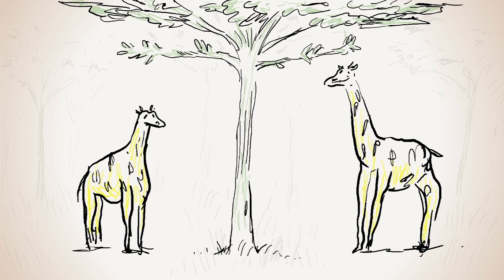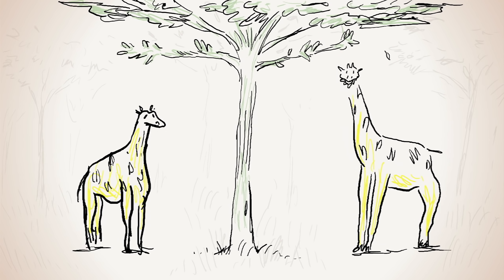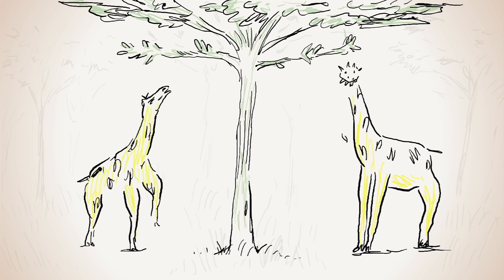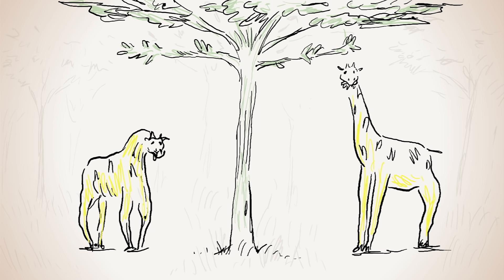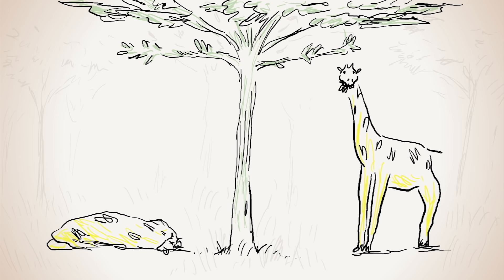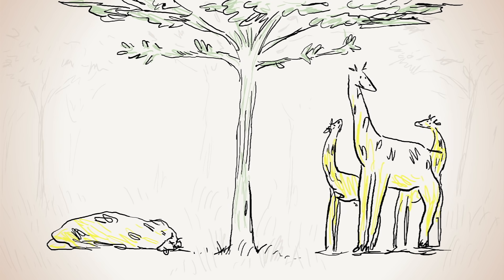To answer this question, it helps to understand natural selection. Natural selection simply means that traits which help an organism survive and reproduce in a given environment are more likely to make it to the next generation.